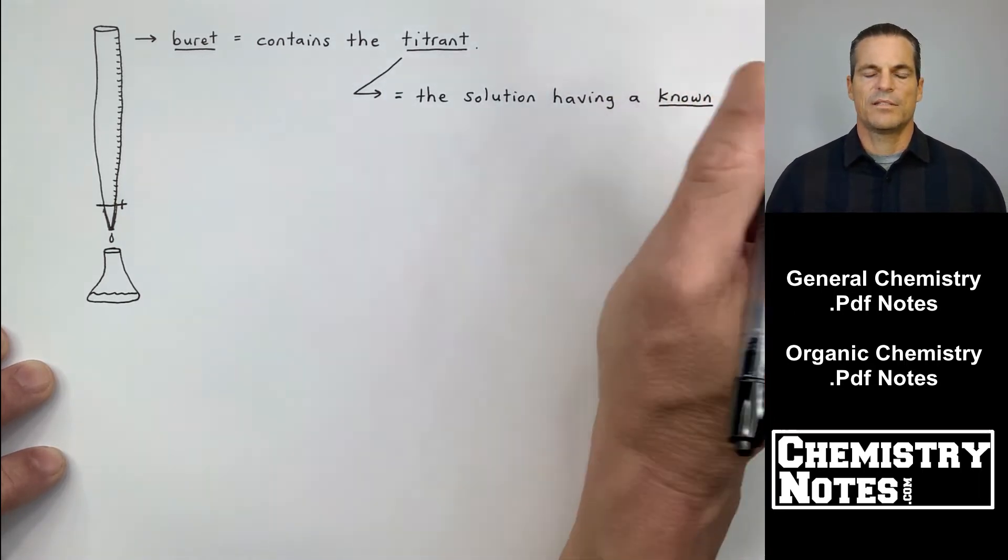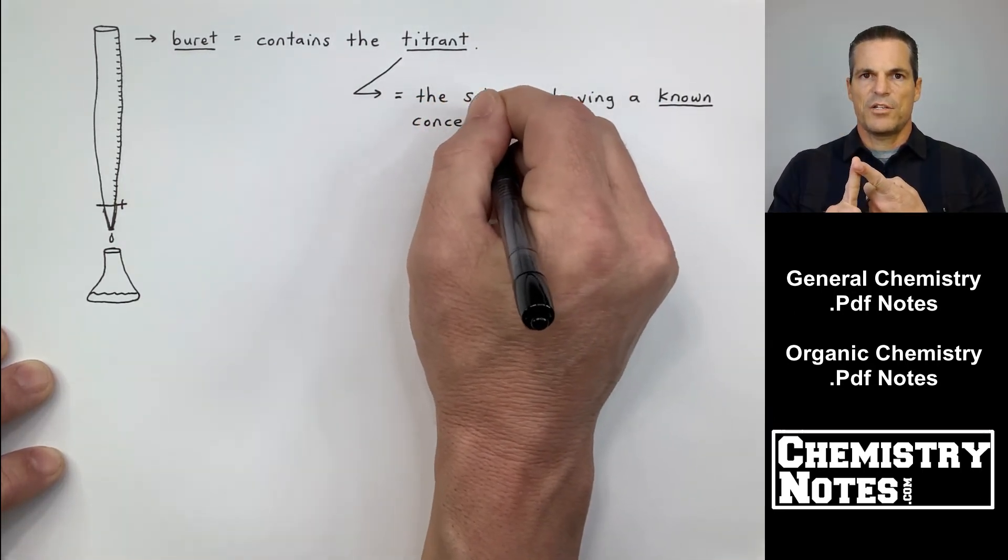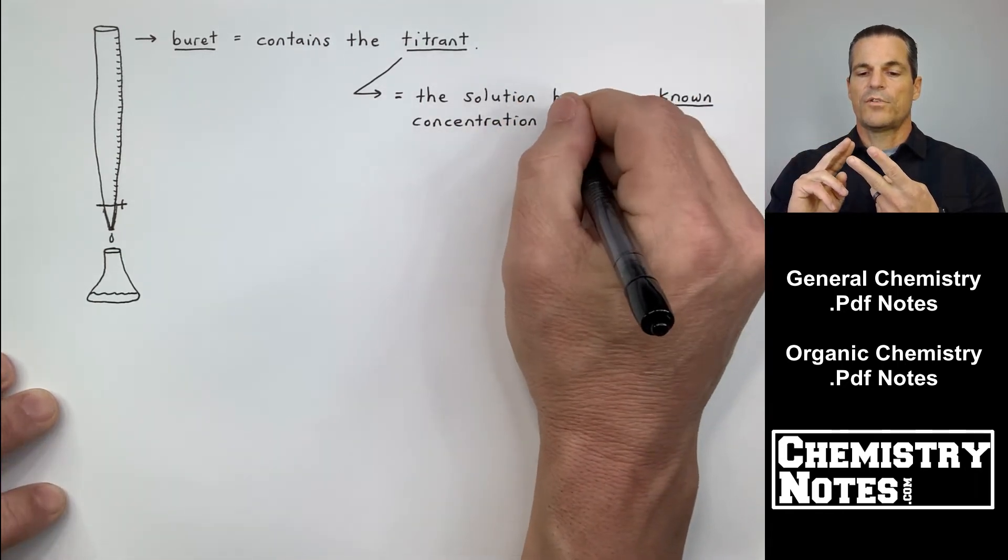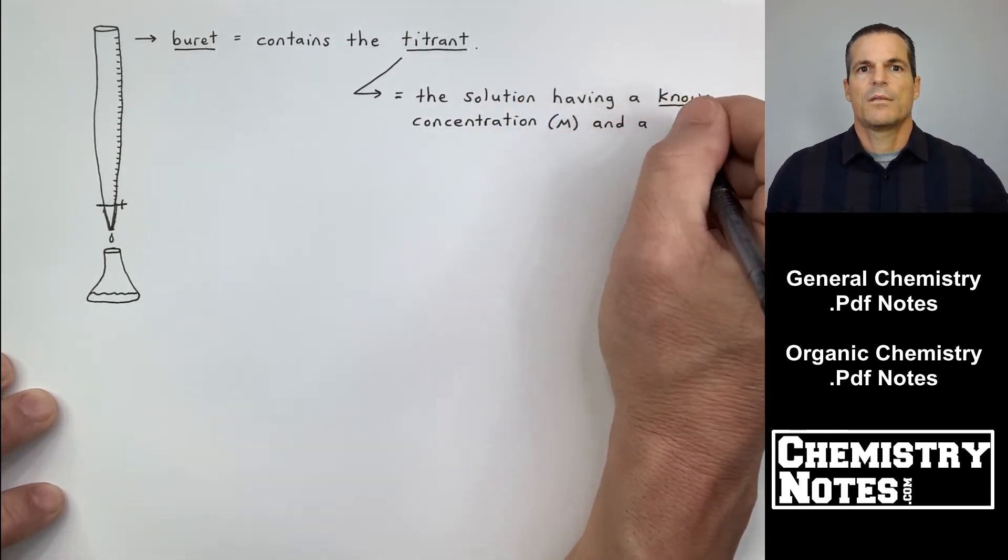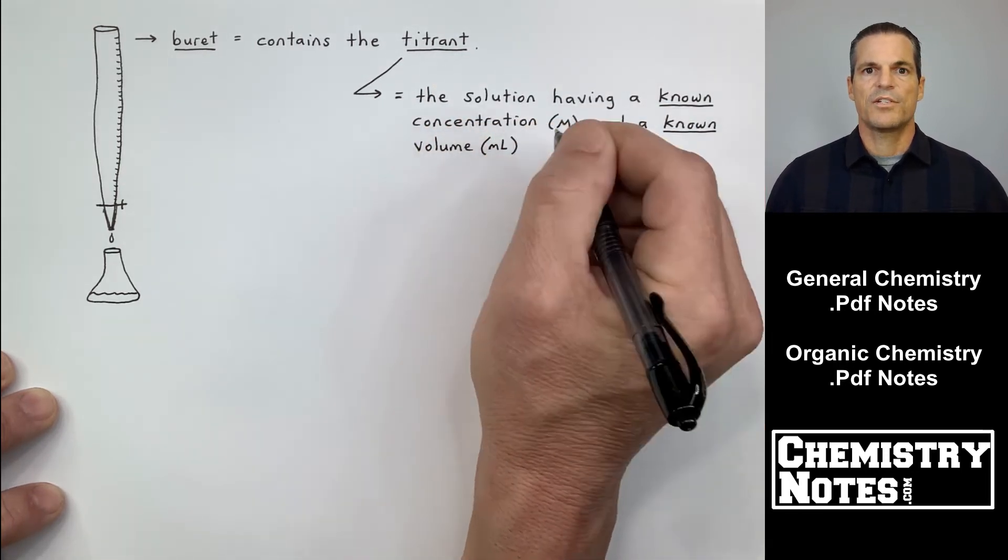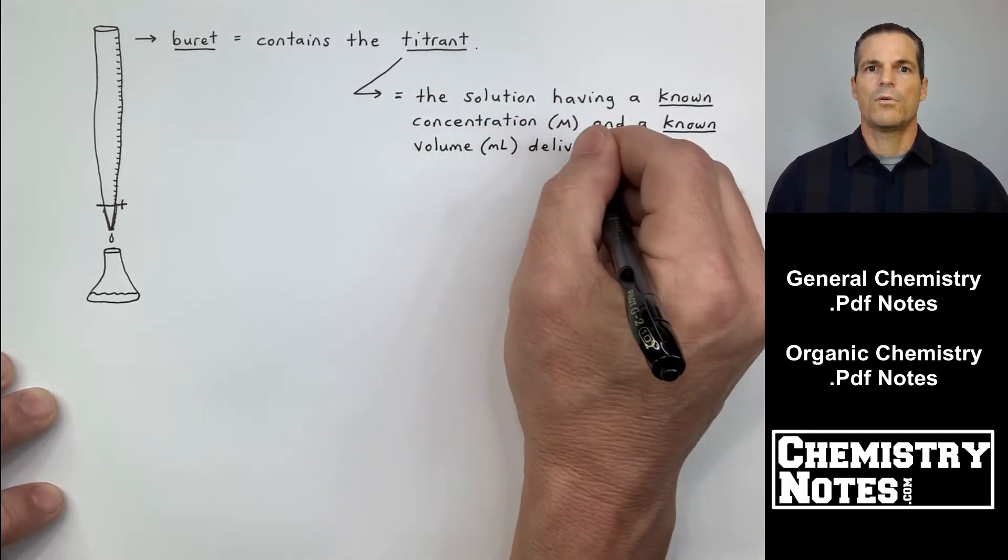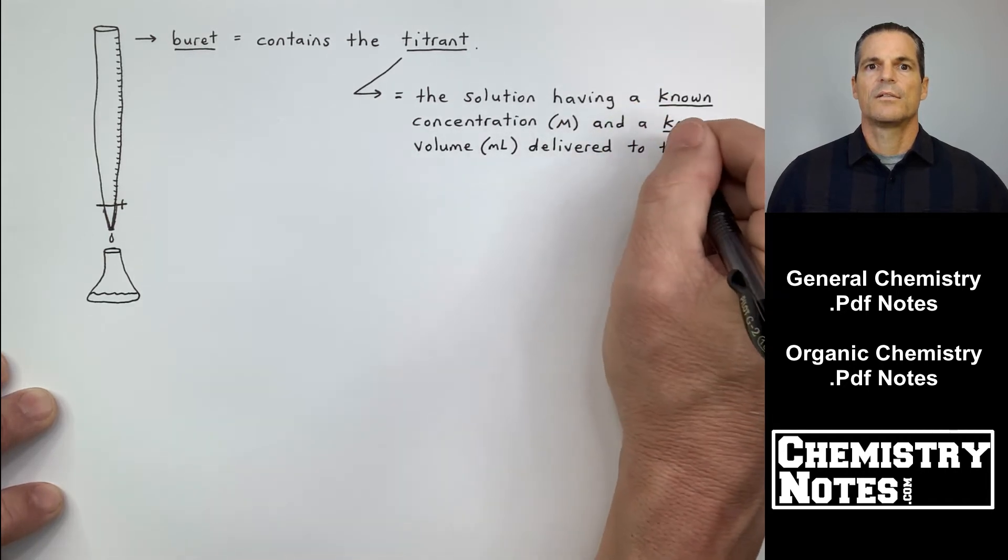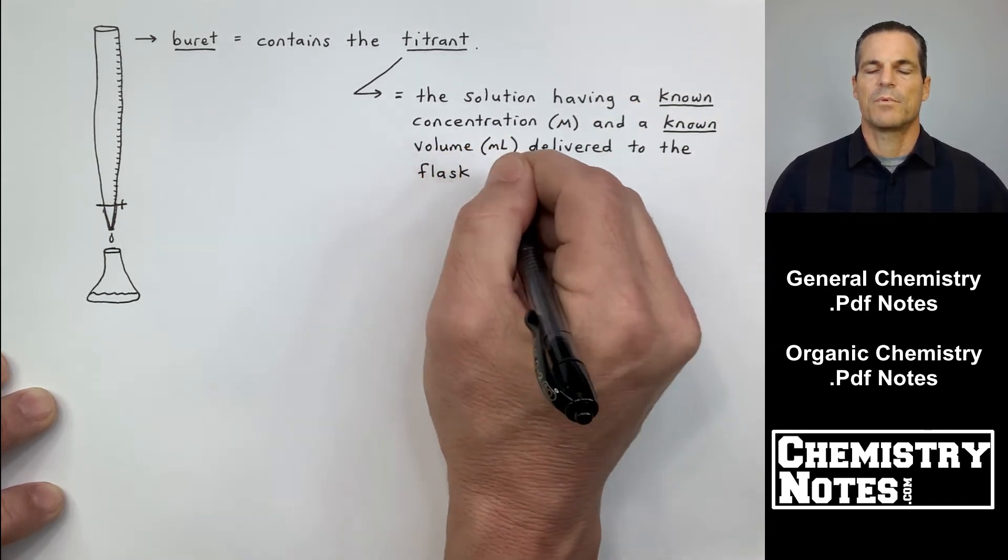It contains something called the titrant and titrant is the solution that you know all about. And what I mean by you know all about, it means you know its concentration or its molarity, and you know the total volume that you use. So titrant is equal to the solution having a known concentration and a known volume delivered to the flask below.